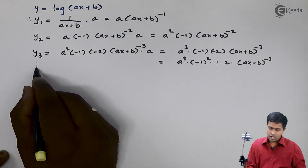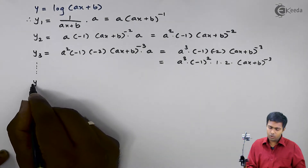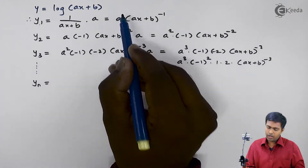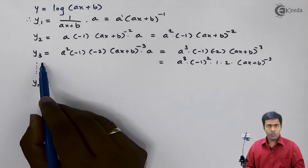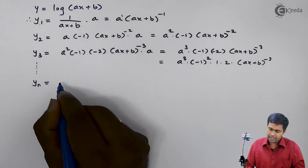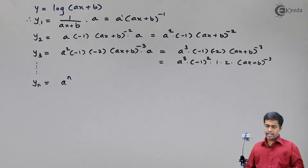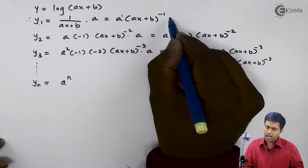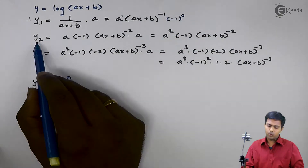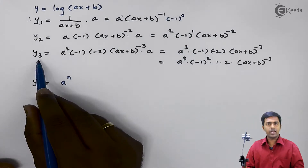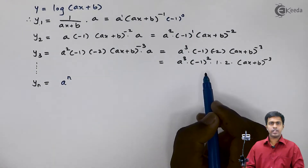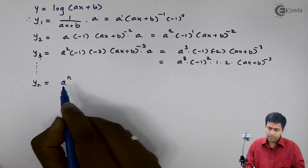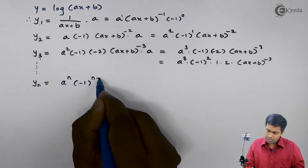So let us predict the value of yn. If you observe: in y1 we had a raised to 1, in y2 we had a squared, in y3 we had a cubed — so in yn we will get a raised to n. Next, in y1 we were not having any (minus 1) raised to a power, meaning we had (minus 1) raised to 0. In y2 we got (minus 1) raised to 1. In y3 we got (minus 1) raised to 2. So every time we are getting the power 1 less than the value of the derivative — so in the nth derivative I will get (minus 1) raised to (n minus 1).